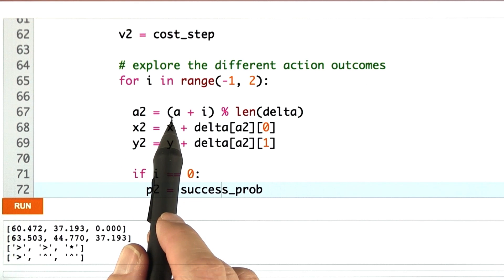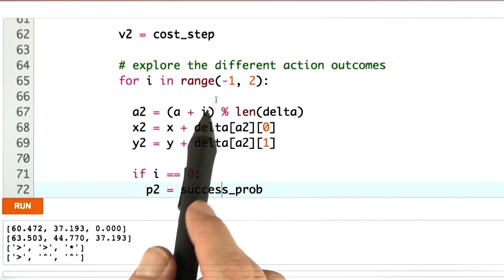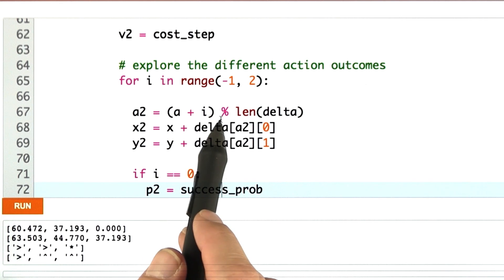You might remember the action list is a list of different outcomes. By incrementing it by 1 or decrementing it by 1, I can pick a slightly different action in that list.